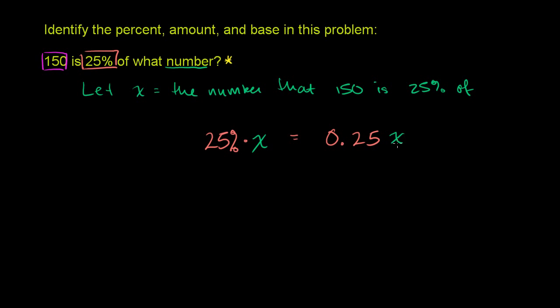These two statements are identical. So if you start with that number, you take 25% of it, or you multiply it by 0.25, that is going to be equal to 150. 150 is 25% of this number. And then you can solve for x.